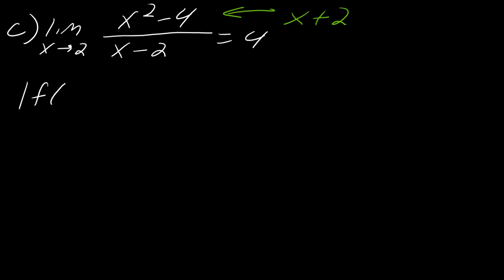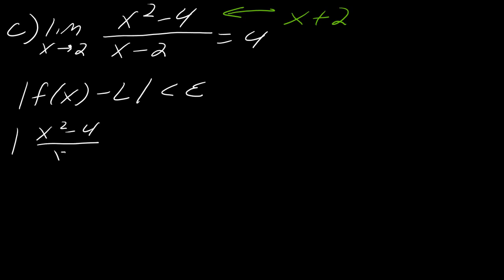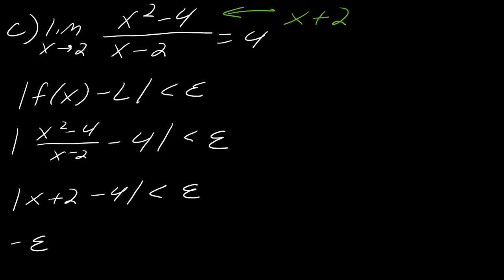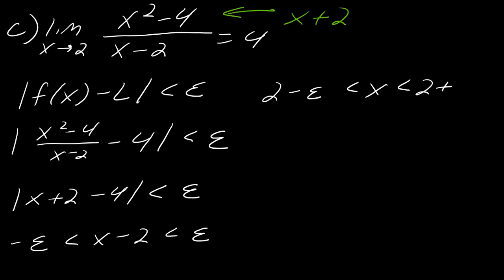Working with our definitions, I'm going to plug in my f of x. My f of x is x squared minus 4 over x minus 2, and then all of this minus 4 is less than epsilon. I can simplify: x plus 2 minus 4 is less than epsilon. So this becomes: negative epsilon is less than x minus 2, which is less than epsilon. Ultimately I get 2 minus epsilon is less than x, which is less than 2 plus epsilon. Notice that these are already clearly defined distances around x, so you can probably already see what the delta is going to be.